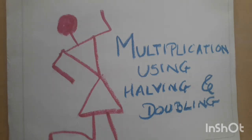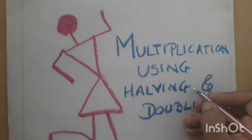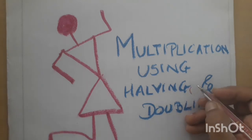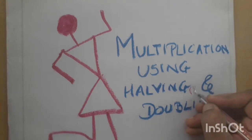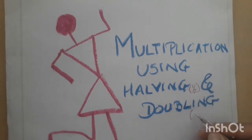Hello children, today we are going to see multiplication using halving and doubling. What does it mean? You are going to take one of the factors, make it half, and the other factor you are going to make it double. Let's see how the method works.